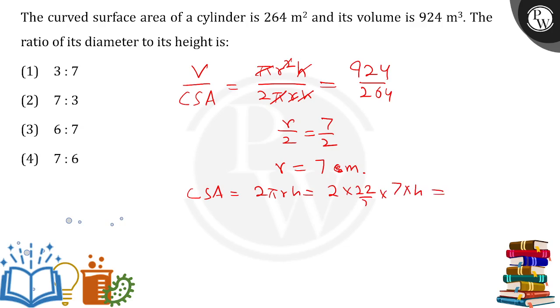h is something which we don't know. We have been given this as 264. We can do the calculation. From here the h value will come out to be 6 meter. But once we have the 6 meter, diameter by height will be what?